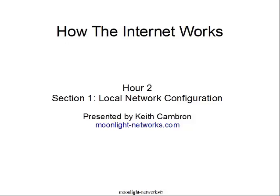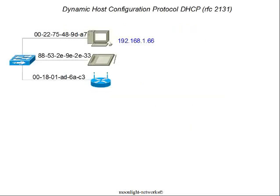I'm Keith Cameron. This is the course 'How the Internet Works,' section two, unit one: local network configuration. In this section we'll explore how local networks are configured, using the example of adding a tablet to an existing home network to understand how it gets an IP address and how it's able to access the broader internet.